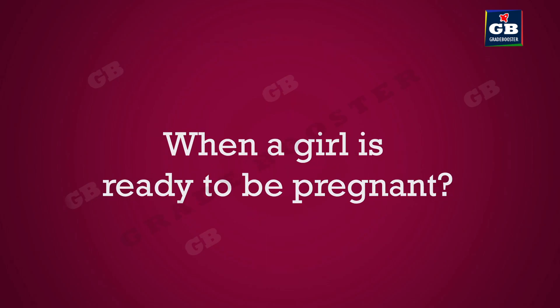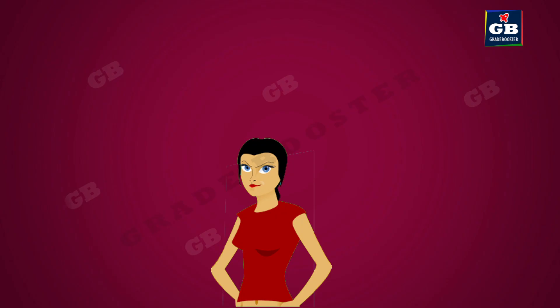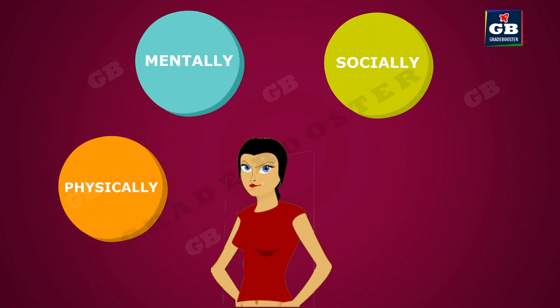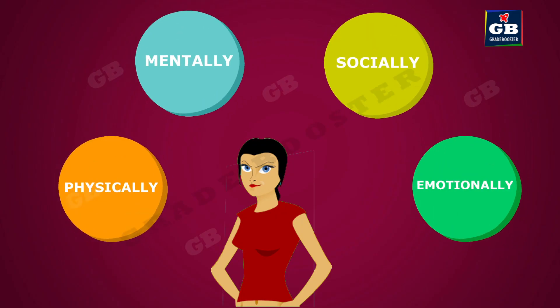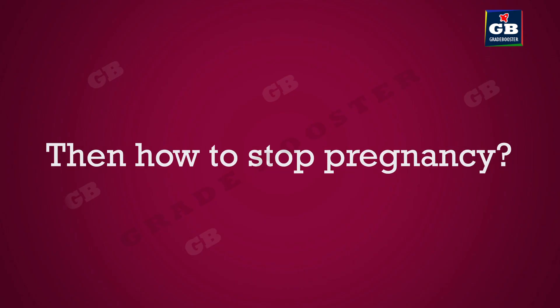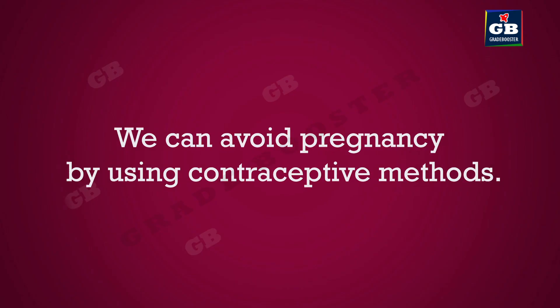When a girl is ready to become pregnant, she should be physically, mentally, socially, and emotionally ready. If not, the health of the girl will be adversely affected. So how do we stop unwanted pregnancy? We can avoid pregnancy by using contraceptive methods.